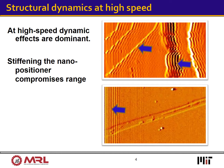But why can't we just move faster? At high speeds, dynamic effects become dominant. On the right you can see two microscopy images captured at speeds just slightly above the nanopositioner's capability. The artifacts that appear in these images are caused by vibrations induced in the nanopositioner at high speed. By driving the positioner even faster, these effects will completely dominate captured images, and may also damage the probe or the sample.